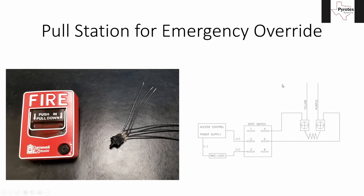Looking at the diagram on the right, terminals one, two, and three are connected: two is your common, and one and three are your two switch points. Same with four, five, and six: five is your common, and four and six are your two switch points. The two sides are in no way connected horizontally — whatever you wire to four, five, and six has nothing to do with what's wired on one, two, and three. This one switch lets us control two separate things, replacing the switch that normally goes inside the pull station itself.